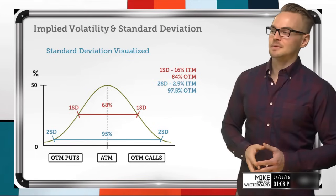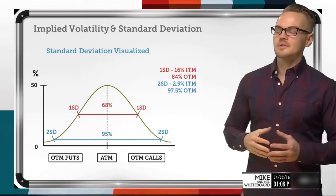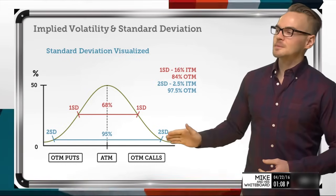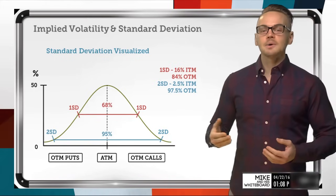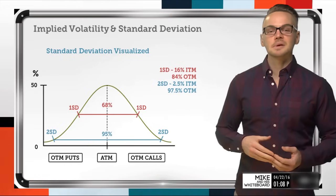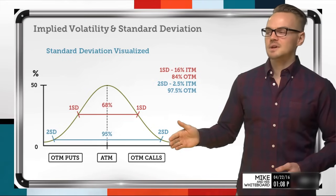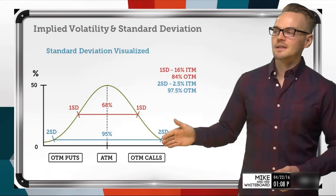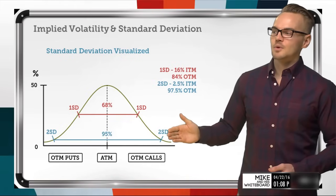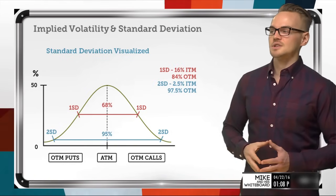That is exactly why we call it a one standard deviation range when looking at that strangle. Now for two standard deviations, it's even further out of the money, meaning it's going to have a smaller percentage of being in the money. If I'm looking at selling a two standard deviation call, I would be looking at a probability of 2.5% of being in the money — much lower because that strike is much further up on the strike bar.